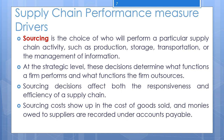The next component is supplier selection — company managers must decide on the number of suppliers they will have for a particular activity. They must then identify the criteria along which suppliers will be evaluated and how they will be selected. Managers must also decide whether they will use direct negotiations or resort to an auction, and if an auction is used, it must be structured to ensure the desired outcome.